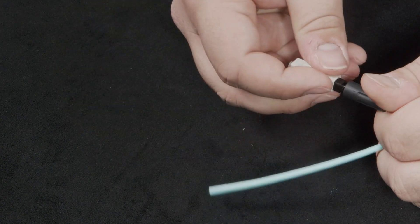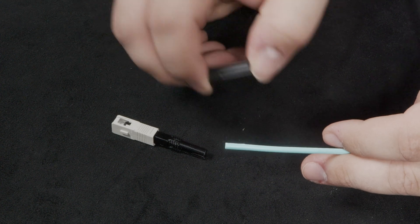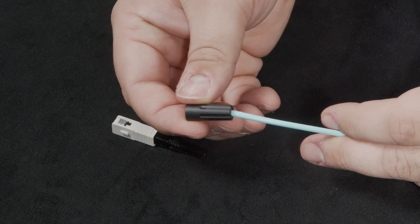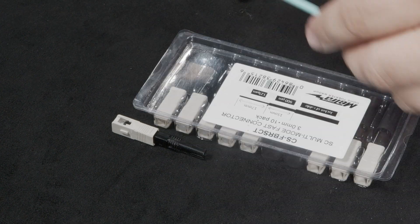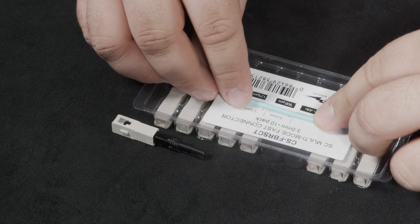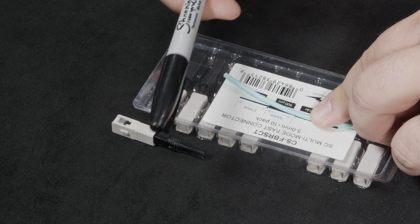Terminating an SC connector is very similar to the LC connector. First, remove the boot from the connector and slide it over the fiber. Then, lay the fiber over the diagram on the connector packaging and mark with a felt tip marker where the outer jacket should be removed.